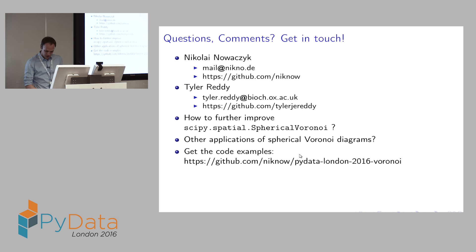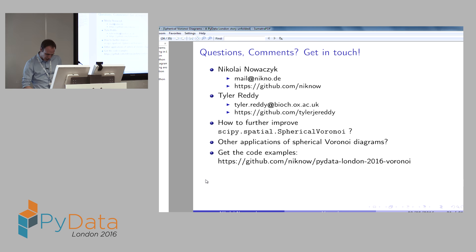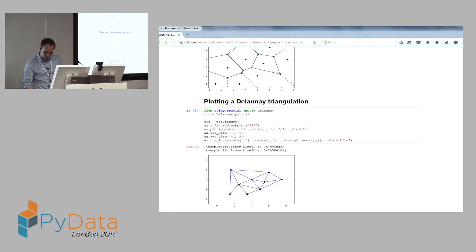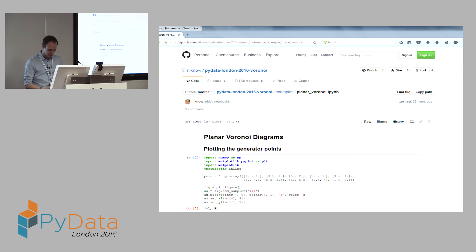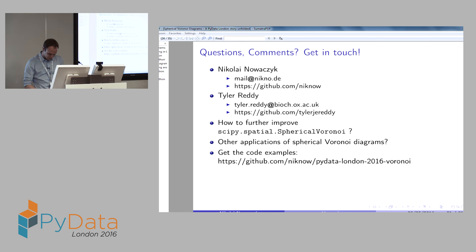If you want to use the library, please feel free to check it out — it will be in the next release or you can clone the current master branch. If you have any other ideas on how to use spherical Voronoi diagrams, please let me know. You can go to my GitHub, where I put a repository containing a few examples of Voronoi diagrams — the planar case and a few more Jupyter notebooks with examples using the spherical version.